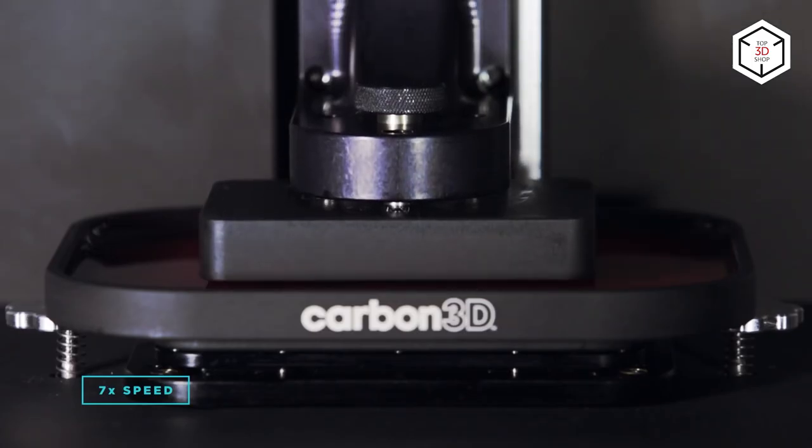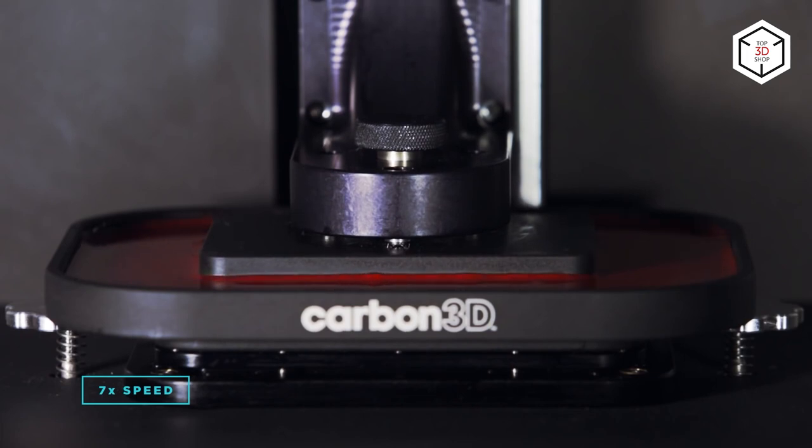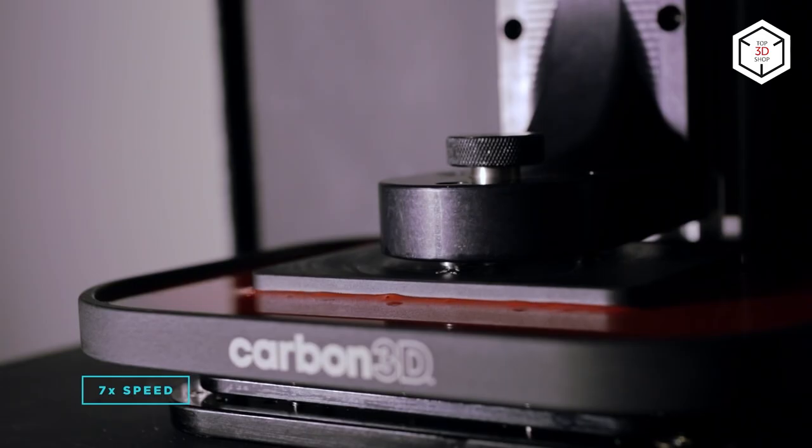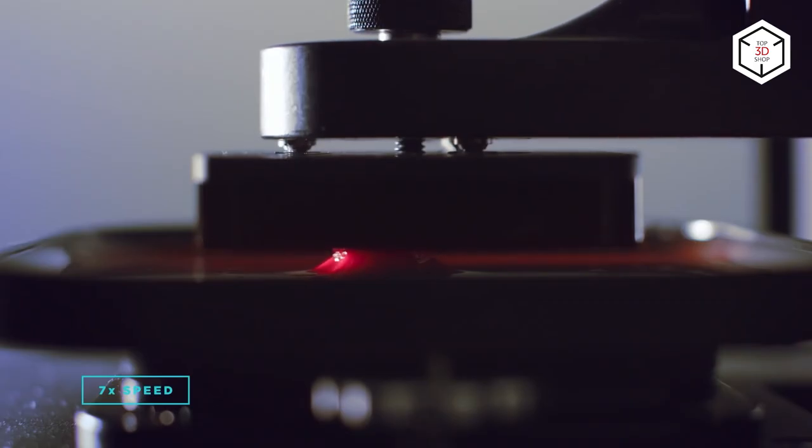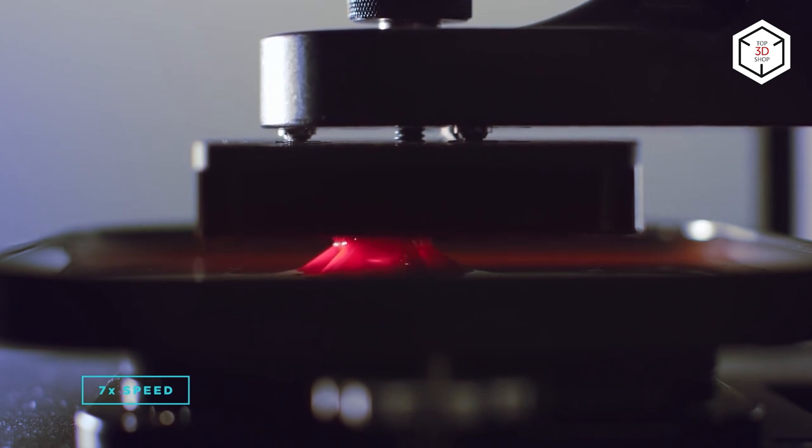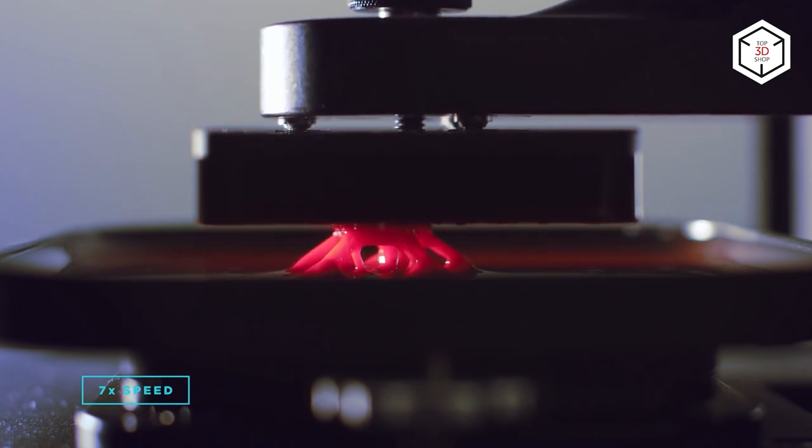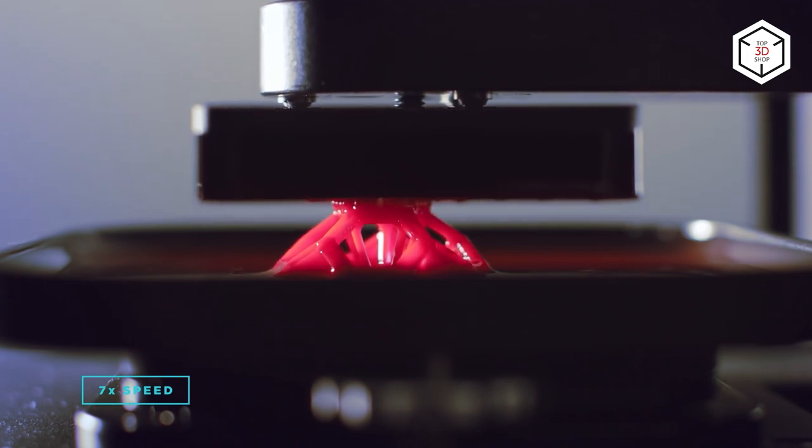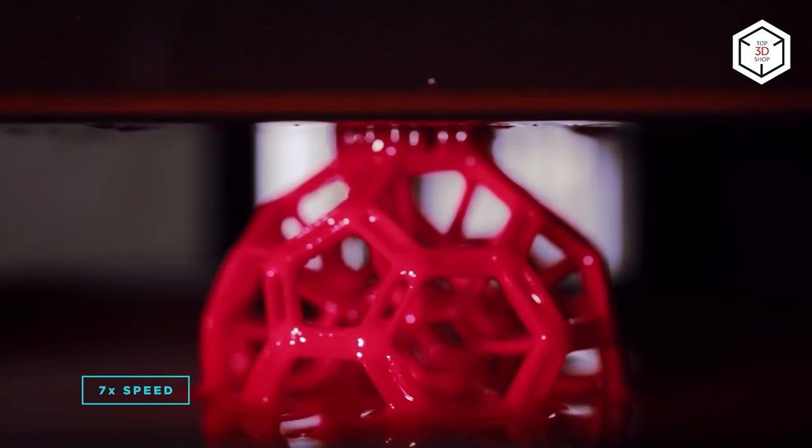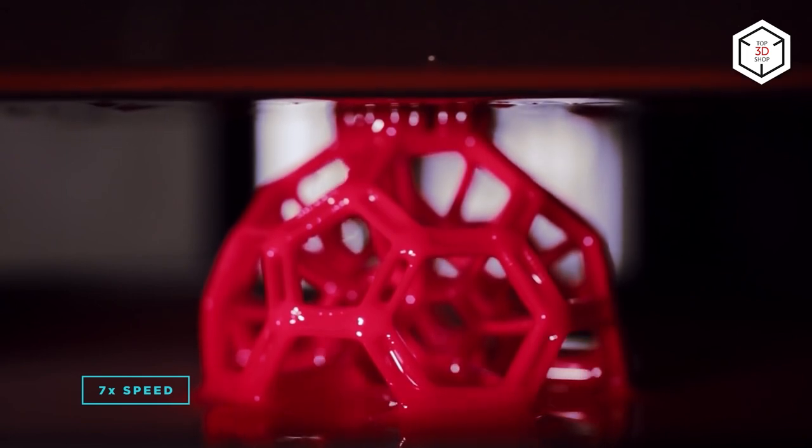CLIP, standing for Continuous Liquid Interface Production, was developed by the Carbon 3D company. Like with SLA technology, the models are printed layer by layer, but you don't have to wait for each layer to be cured since the technology harnesses oxygen as an inhibiting agent. This allows for print speeds 25 to 100 times higher than that of any other existing 3D printing technology. Such an approach not only decreases production time but also removes the layering effect in the print structure.